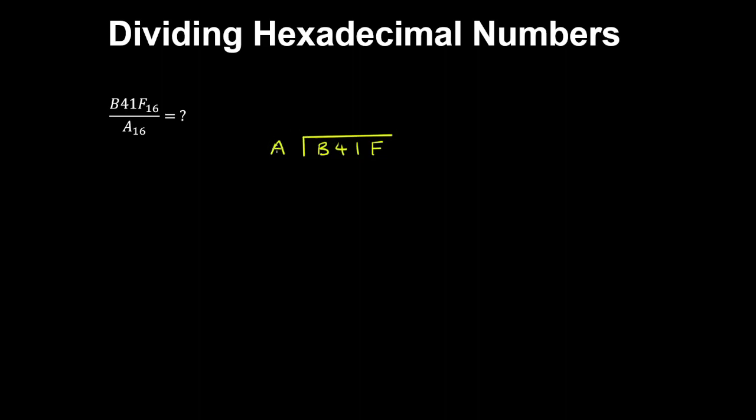Well we know A is 10 and B is 11, so 10 goes into 11 once, times A is A, and then we subtract the result, and that gives 1.